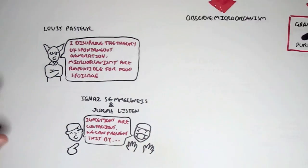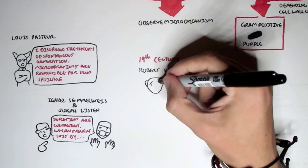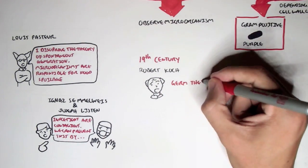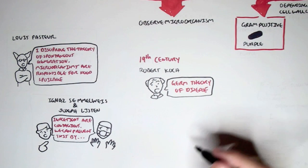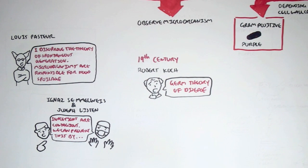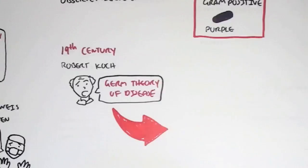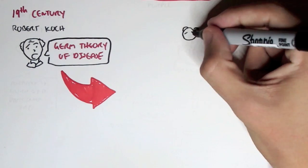And there are some really interesting stories behind these people. And then in the 19th century, there was a really important man by the name of Robert Koch, and he proposed a germ theory of disease. So what is this theory? Well, this theory essentially says that a disease is obtained from a particular microorganism or an organism.